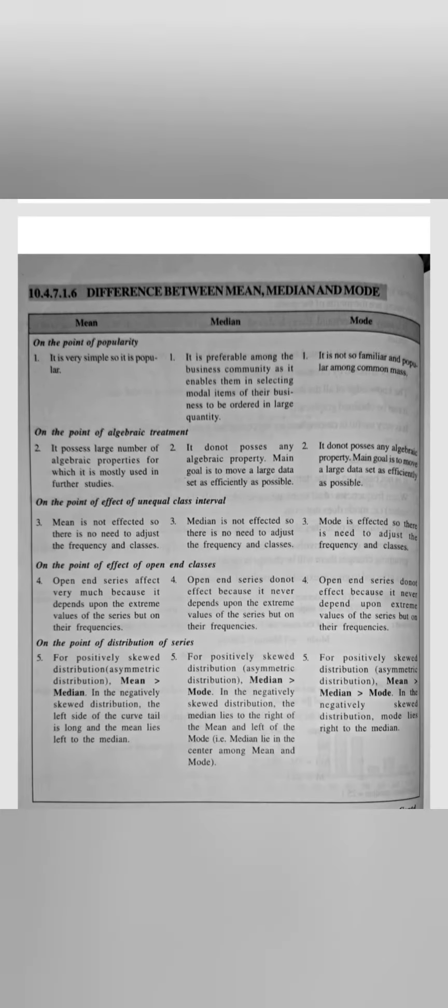This is important: the difference between mean, median and mode. This is a very important difference. So, this is the first chapter of your theory — Measures of Central Tendency.